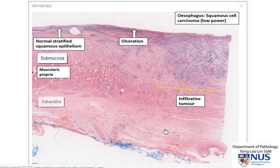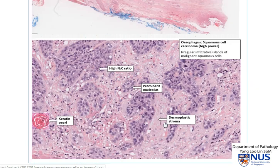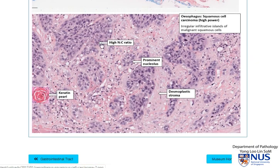This other pink layer that appears to be less dense is the adventitial layer. On higher magnification, we can see these very irregular infiltrative sheets of malignant squamous cells. And how do we know that they are squamous? In this corner, we see a nice keratin pearl, and this tells us that the type of tumor is squamous.